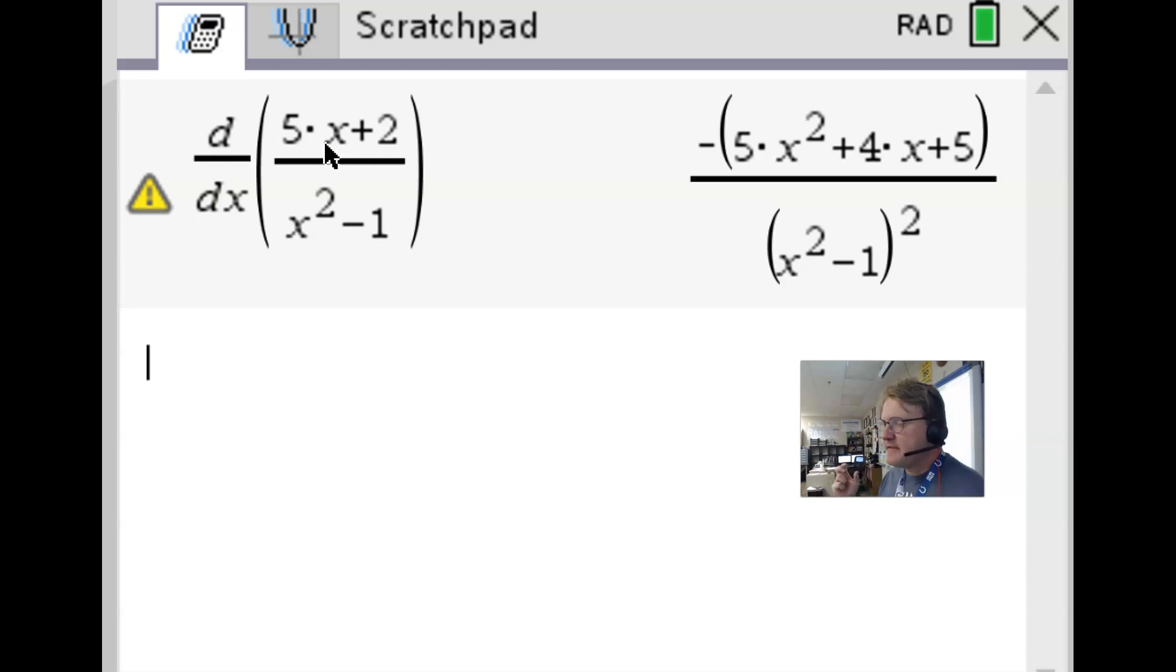And we'll see what this gives us. And aside from factoring out the negative sign, you can see that this is all the same as what we had on paper there. So we're pretty much in good shape. We've got our first quotient rule solved for.